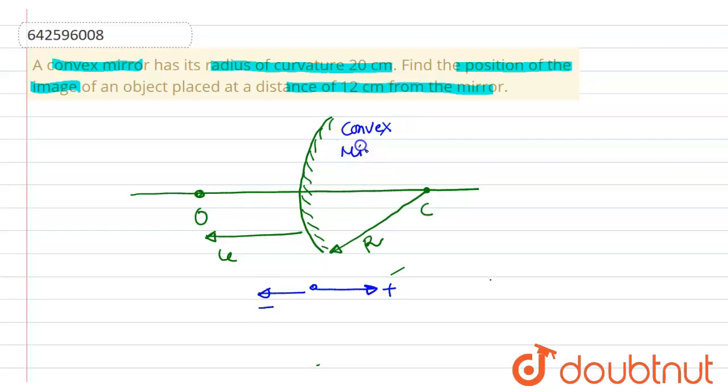we have u equals to minus 12 centimeters, as it is left from the pole, and r equals to plus 20 centimeters, as it is right from the pole.